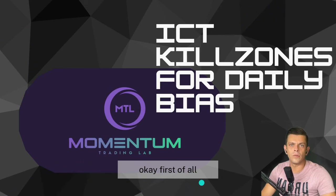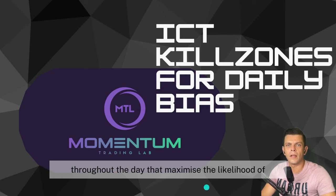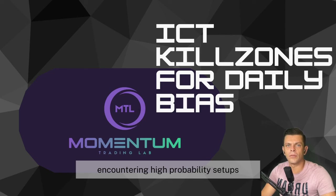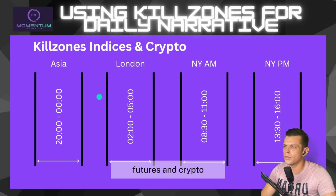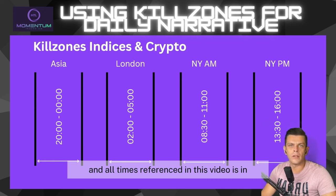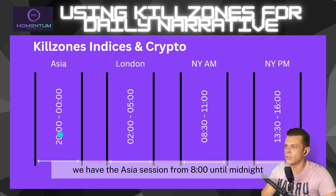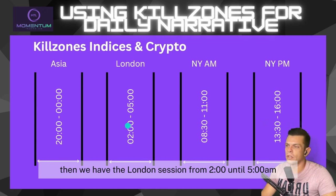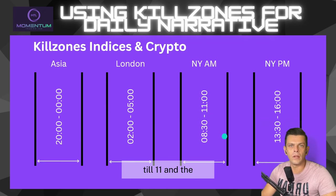First of all, what are ICT kill zones? ICT kill zones are designated time slots throughout the day that maximize the likelihood of encountering high-probability setups. For index futures and crypto, we have the Asia session from 8 PM until midnight, then the London session from 2 AM until 5 AM. All times referenced are in New York or Eastern Standard Time.